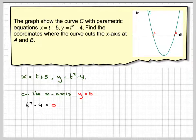This is a squared minus b squared, so it's easy to factorise into t plus 2 times t minus 2 equals 0, which gives t equals plus or minus 2.